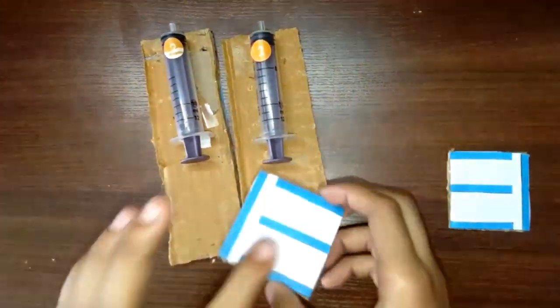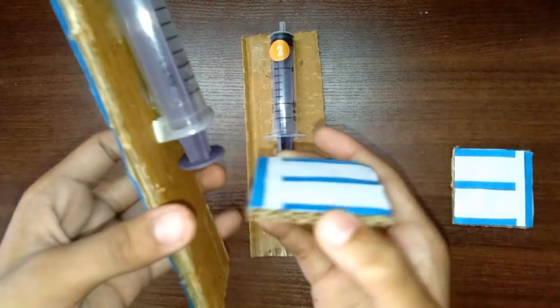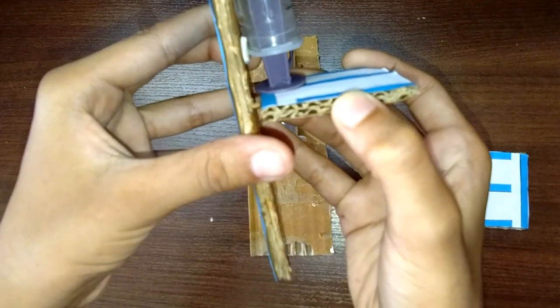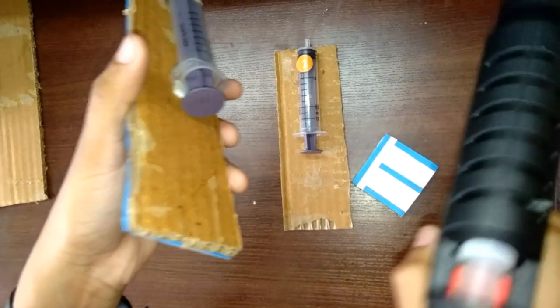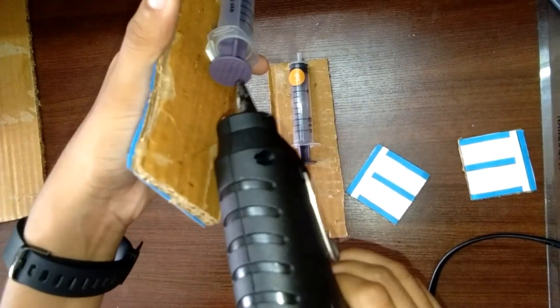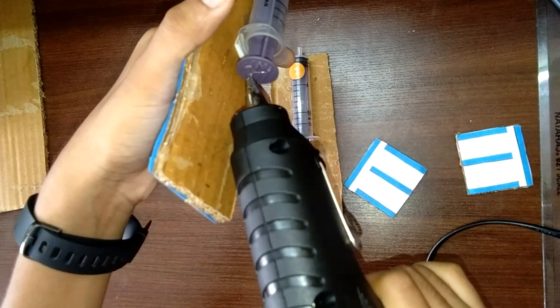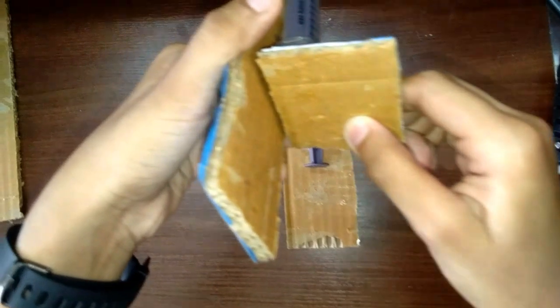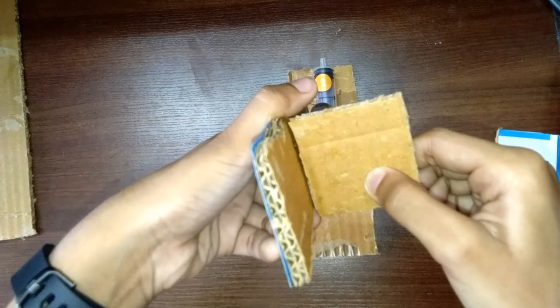Now let's paste this lifter to this. A very important thing is it should not completely touch this part - it should be slightly in this way. So let's stick it. See, I am leaving a little space so that it could move freely. Now similarly stick to the other one also.